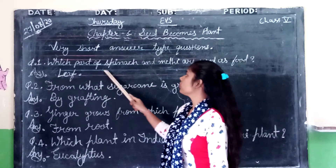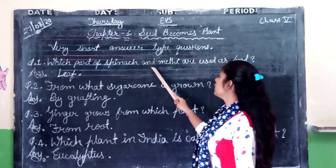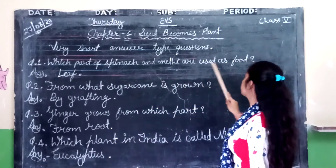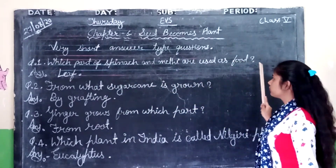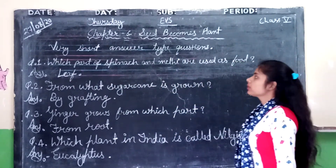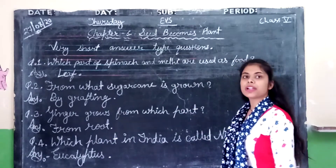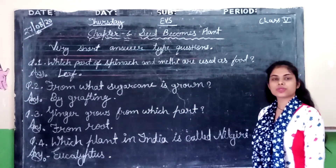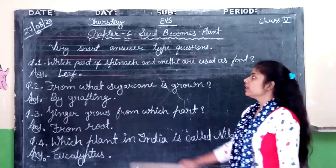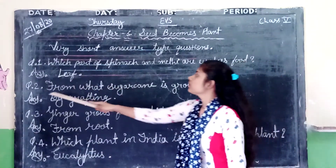Question No. 1: Which part of spinach and medicine are used as food? The part of spinach used as food is the leaf.